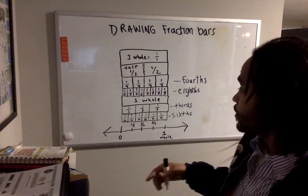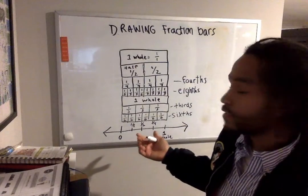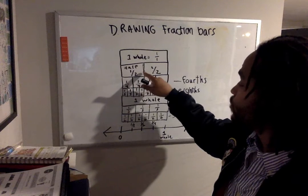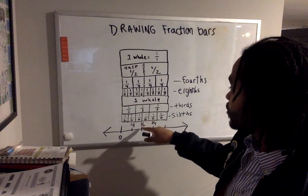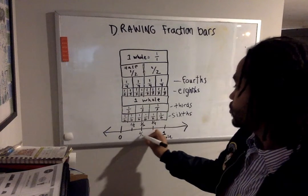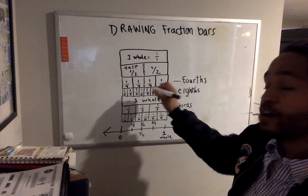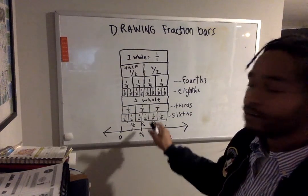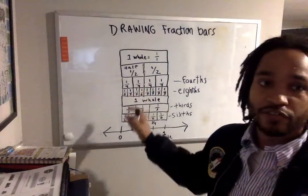Another thing on top of that is that you can see that, for example, let's say I want to find out where two fourths is. One fourth, two fourths. Hmm. It's the same size as one half. If I go down on a number line, one half would be the same as two fourths. And there are other fractions that are the same distance from zero on a number line or the same size on a fraction bar.